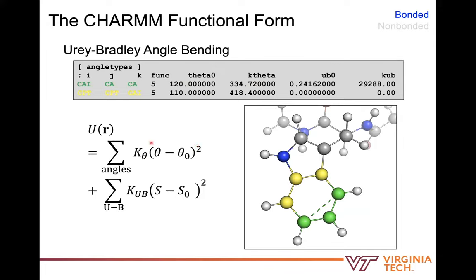Not all angles have this additional Urey-Bradley cross term—some have zero constants for the secondary term because they're suitably represented without it. For instance, on the indole ring of tryptophan's side chain, one angle has the cross term and another does not. This is implemented as angle function type 5 in GROMACS to indicate the potential presence of this auxiliary term.